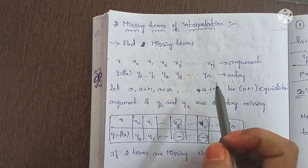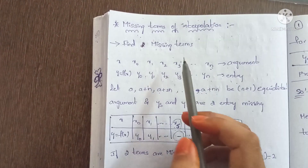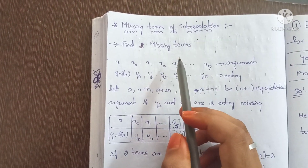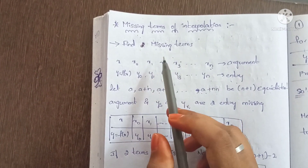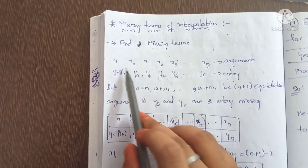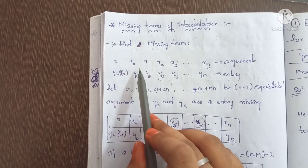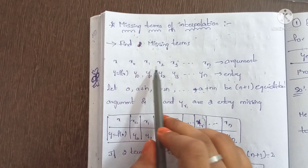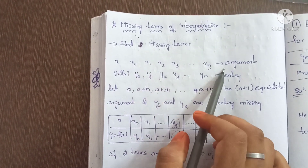Hi friends. Today the topic is missing terms of interpolation — finding missing terms. Here x equals x0, x1, x2, up to xn.